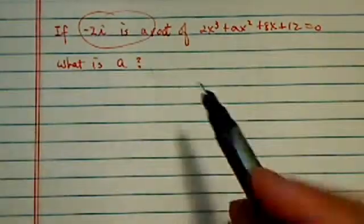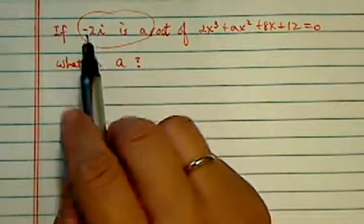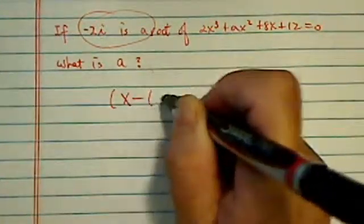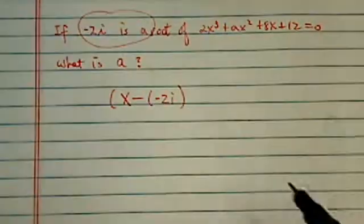There's a trick in here. If they give you x minus 2i as a root, that's the same as x minus this root as a factor.